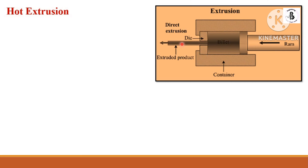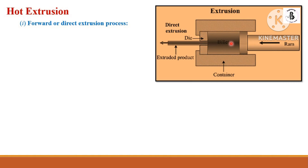A simple example is toothpaste — one end has a circular die opening and when we press from the other end, paste comes out in that shape. Similarly, whatever cross-sectional area the die opening has, you get that extruded product. If you want to make a hollow product, you can put a mandrel in the die. For a solid product, just make the hole without a mandrel. When the metal is at a higher temperature, this is called the hot extrusion process.